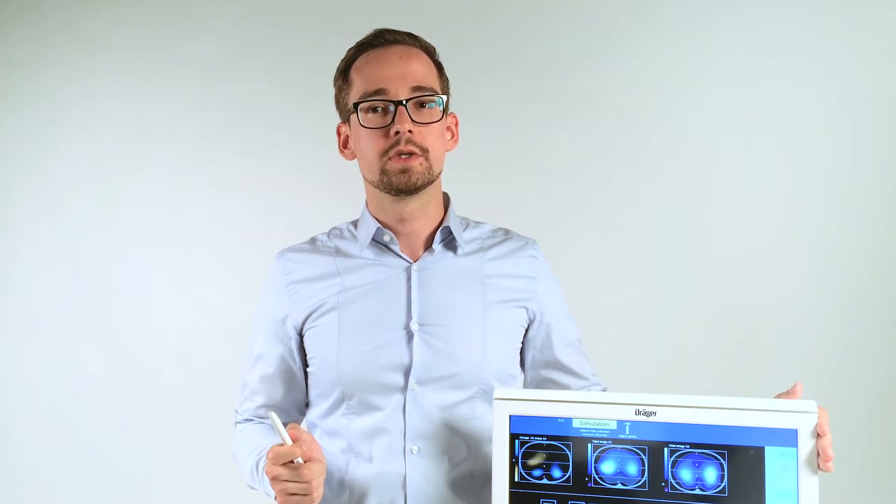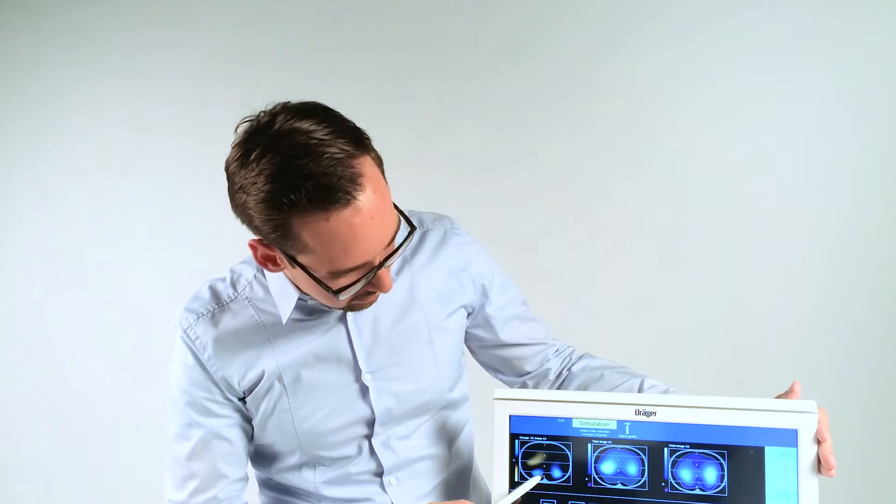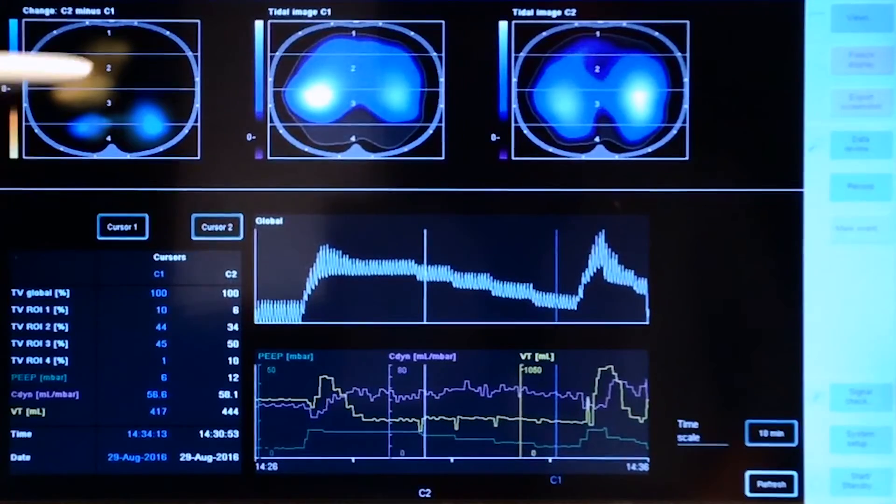But that illustrates exactly the principle of how recruitment works. The recruitment of dorsal parts of the lung is very often accompanied by a certain decrease of the regional compliance in the ventral parts.